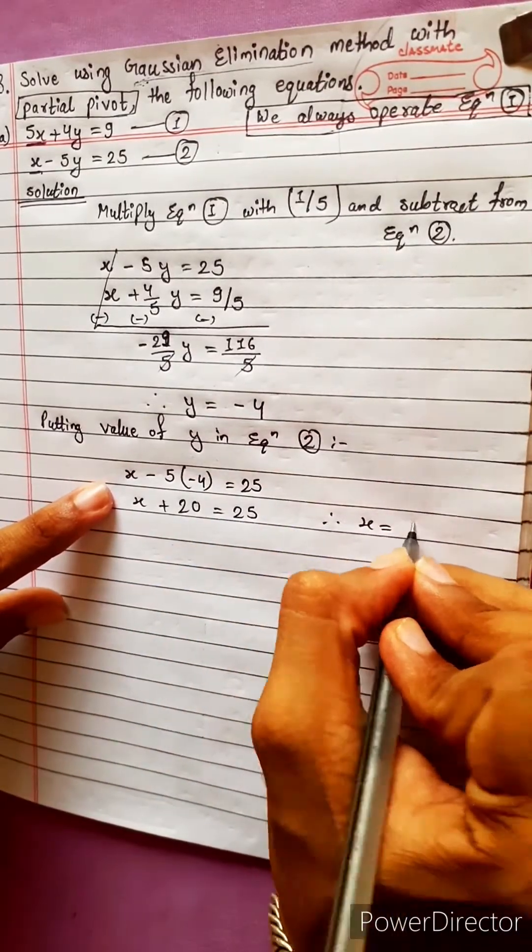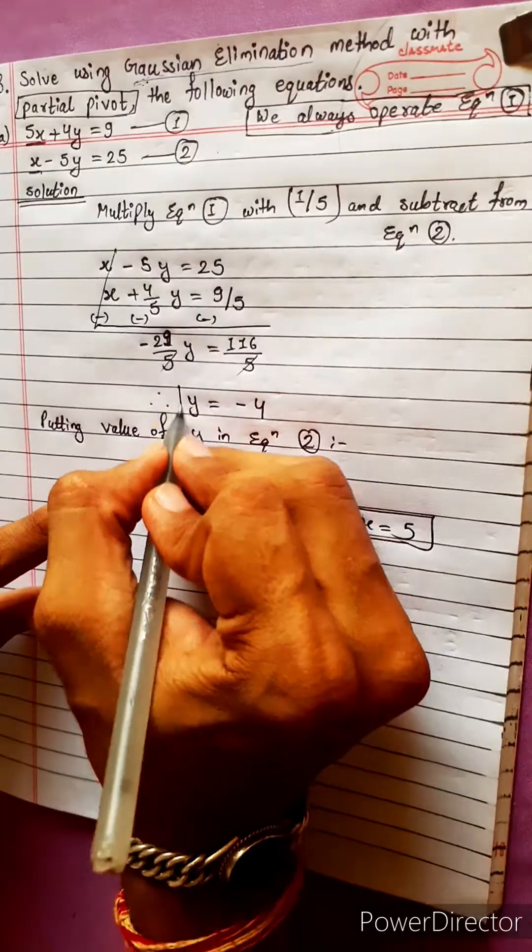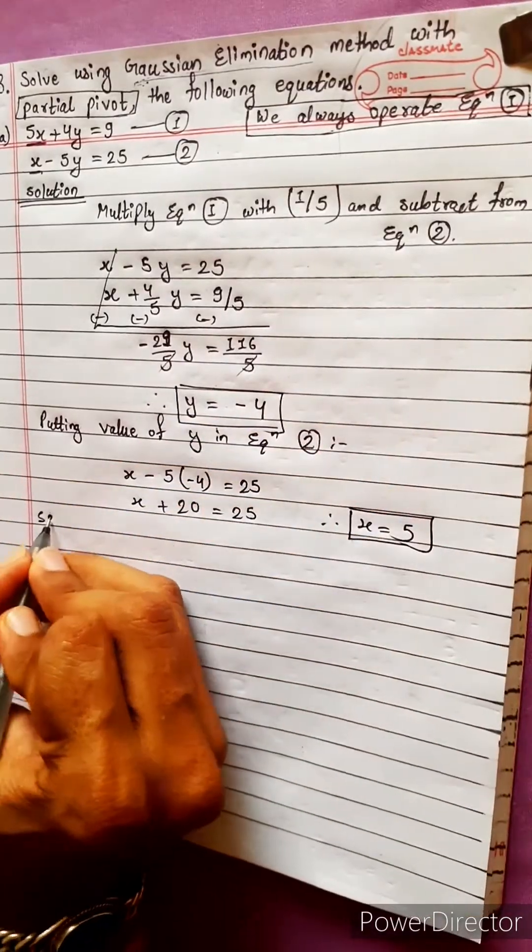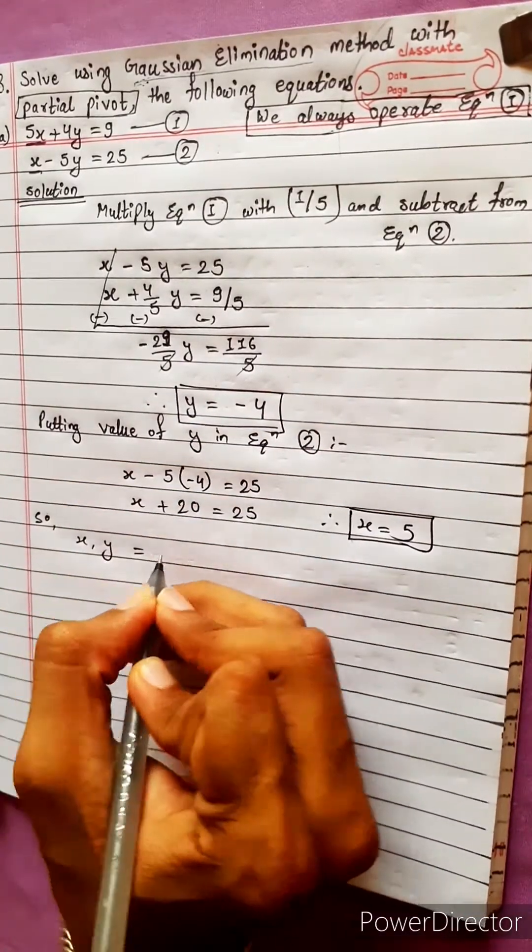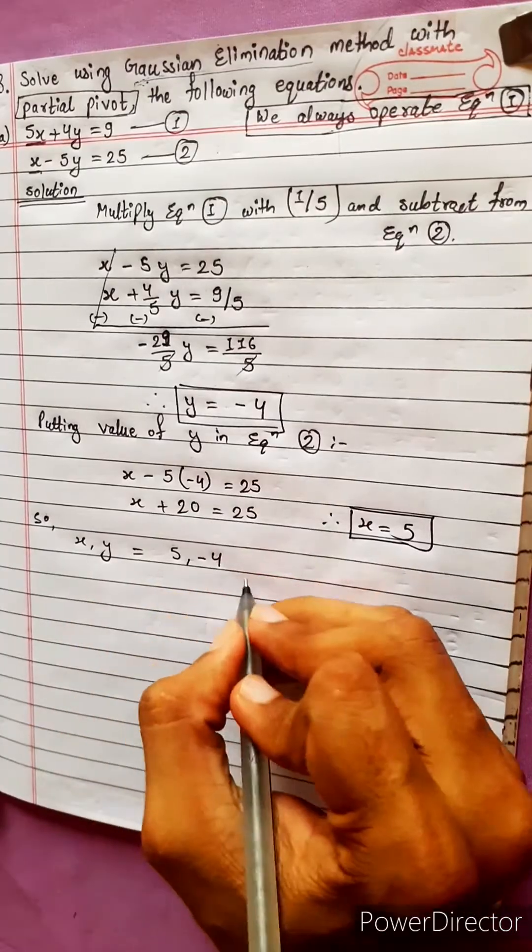Therefore, x equals 5. We got the value of x and y. So x, y equals 5, -4. This is our answer.